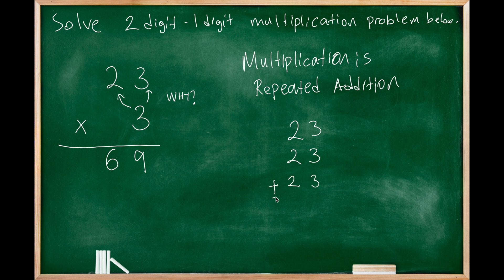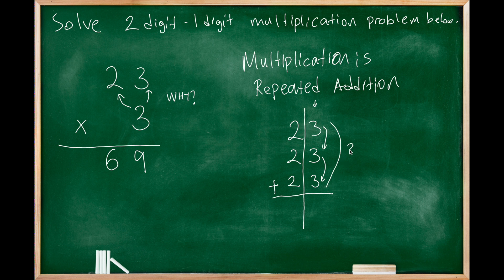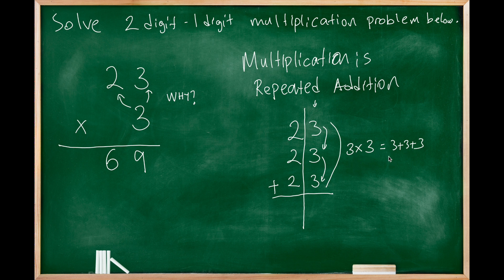In standard algorithm addition, what do we do? We start from the ones place and add the ones place digits to each other. So 3+3+3. I have three groups, so I can say this as three groups where in each we have three. This is basically 3+3+3, three times three as well.